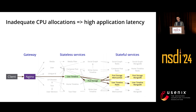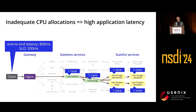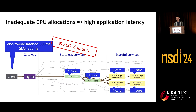If we allocate insufficient CPU to the services — for example, allocate one core for each service — they may perform very slowly, resulting in an end-to-end latency of, say, 800 milliseconds. Typical applications will have an SLO, a service-level objective. 800 milliseconds would be a lot higher than the SLO, so this is called an SLO violation. SLO violations vastly degrade user experience, so it's important to avoid under-allocation and such high latencies.